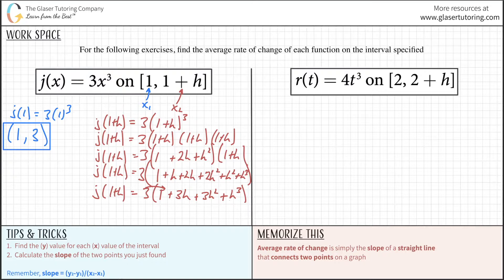Take this and distribute it to every term. So j of 1 plus h equals 3 plus 9h plus 9h squared plus 3h cubed. This is the y value.